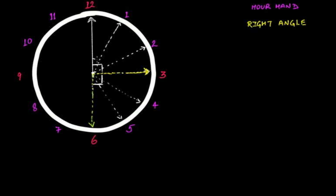Now this right angle plus this right angle — that is two right angles — will make a straight angle. This angle, from the initial position to the point when this hour hand is pointing towards six, will be a straight angle.